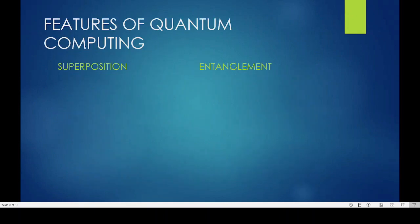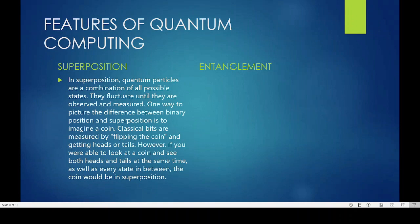Now, coming to features. There are two important features. The first one is superposition, in which quantum particles are seen as the combination of all possible states. They fluctuate until they are observed and measured.